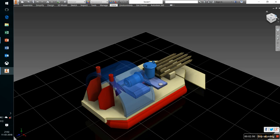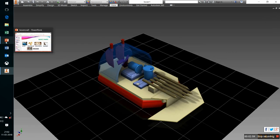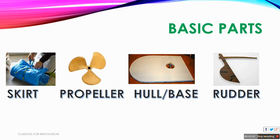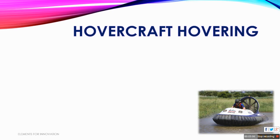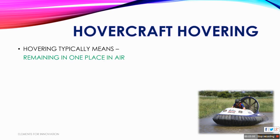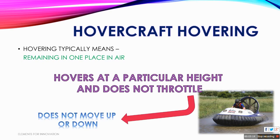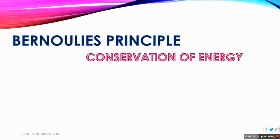Now we will move further and talk about hovering. Hovering typically means remaining in one place in the air — that means our hovercraft can hover at a particular height and does not throttle, meaning it does not move up or down; it only moves at a particular height.